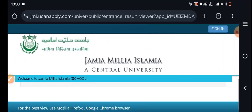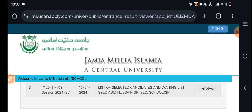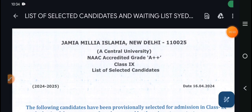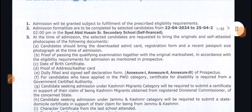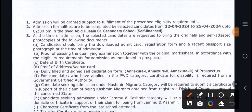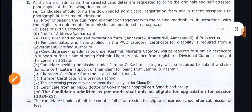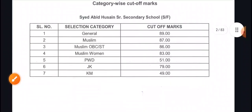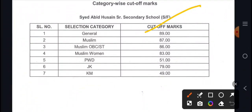Now let's look at Abid Husain school. The PDF is open and the admission date is 22nd to 25th April. Category-wise cut-offs: General 89, Muslim 87, Muslim Women 83, PwD 51, Jammu Kashmir 79, Kashmiri Migrants 49.